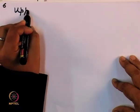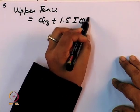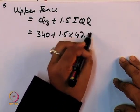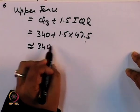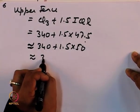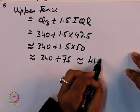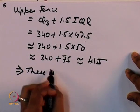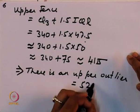The upper fence is Q3 plus 1.5 times IQR: 340 plus 1.5 times 47.5. Approximating 47.5 as 50, this is roughly 340 plus 75 equals approximately 415. Since 520 is well above 415, this confirms there is an upper outlier — the value 520.